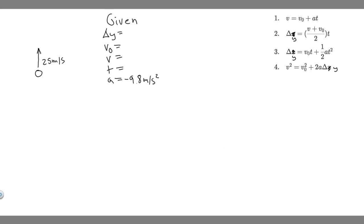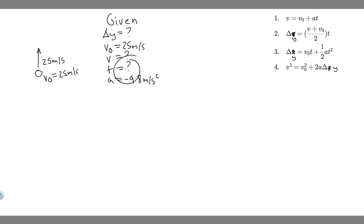The other variables are still the same — we just have to figure those out. So what do we know? The initial velocity V sub 0 is 25 meters per second — that's the speed it travels right when we throw it. Delta Y we don't know, V we don't know, and we don't know T either.